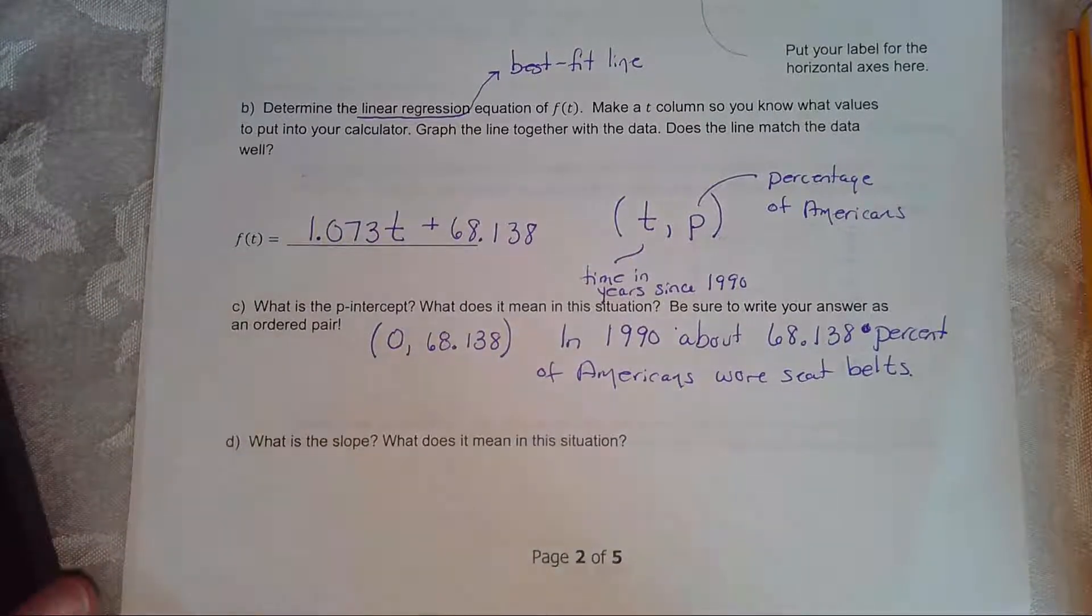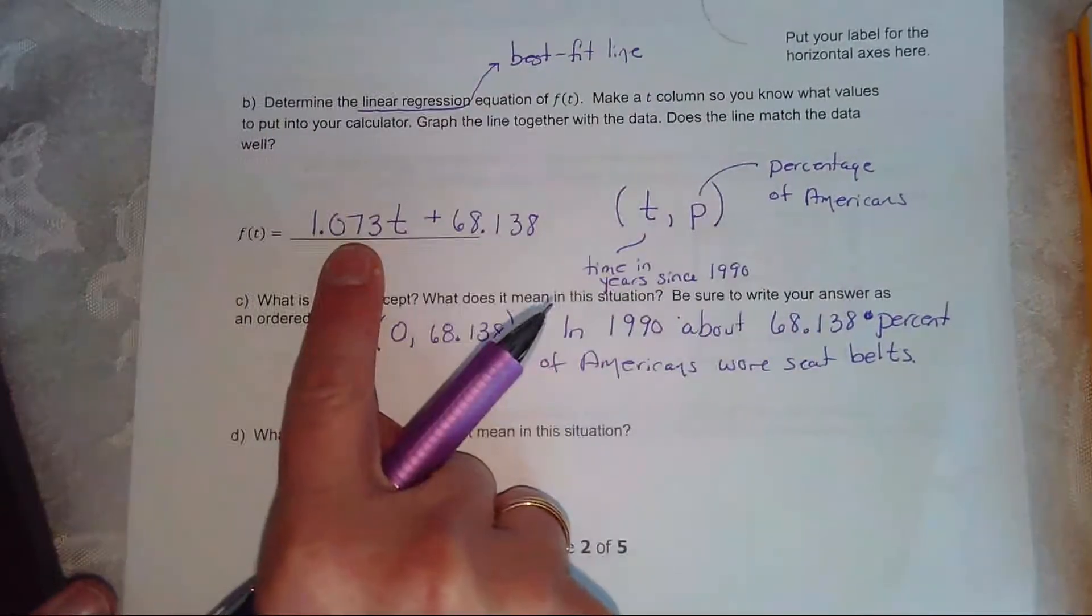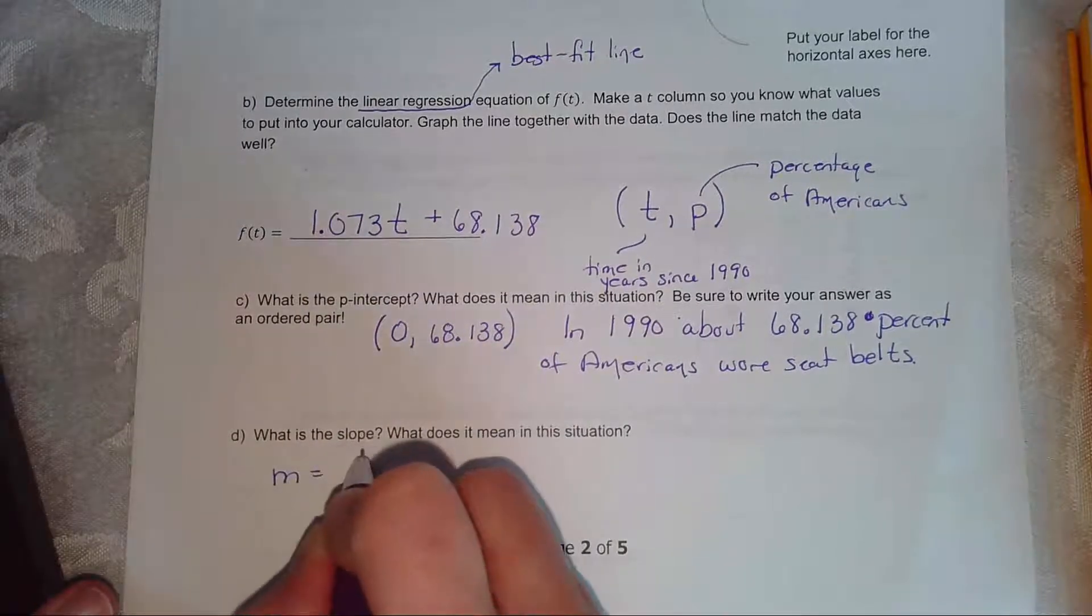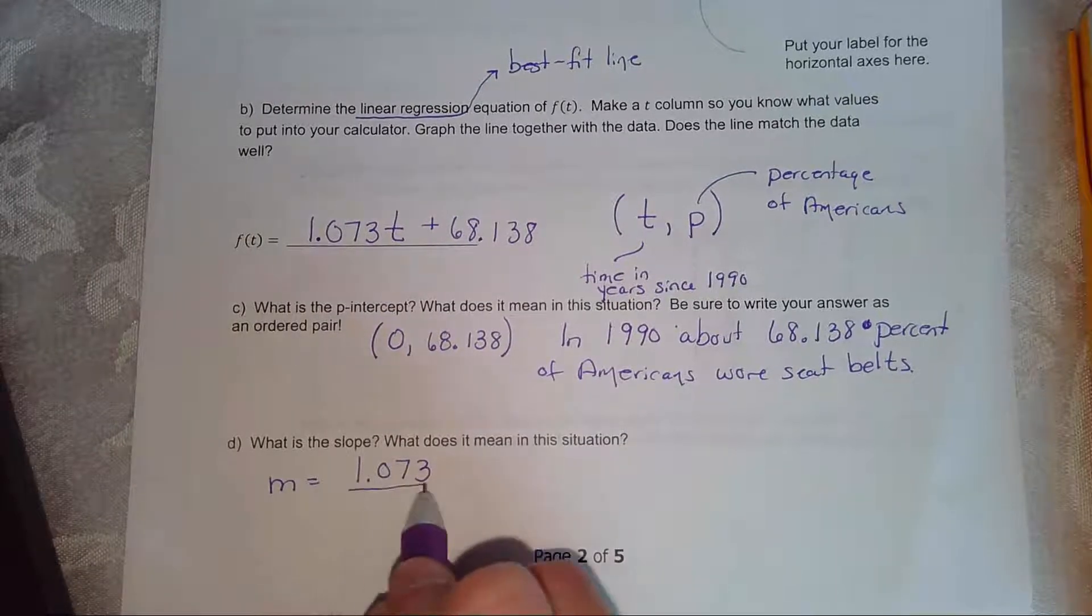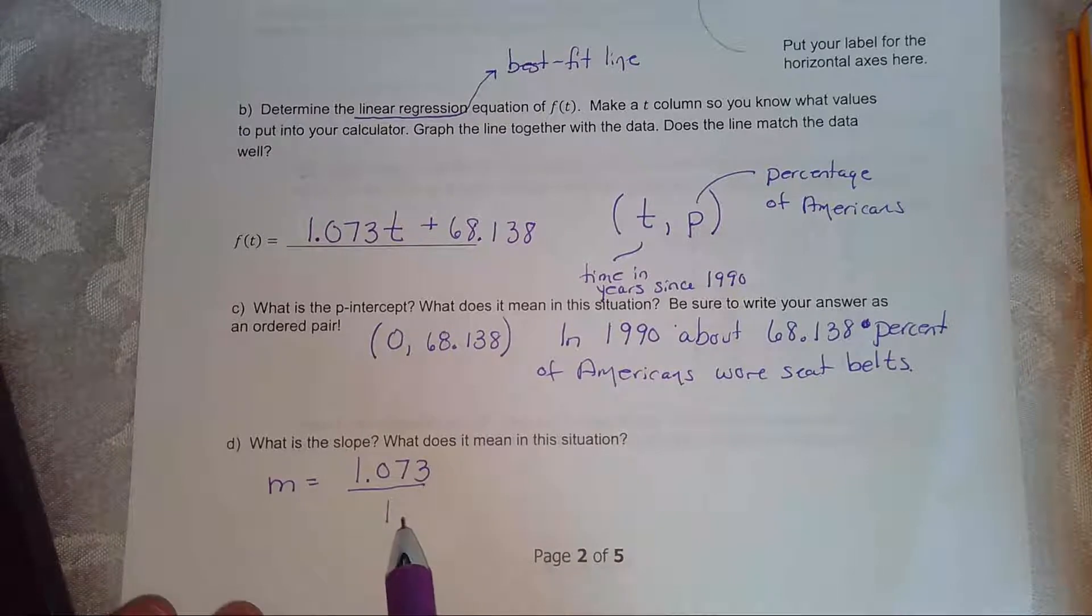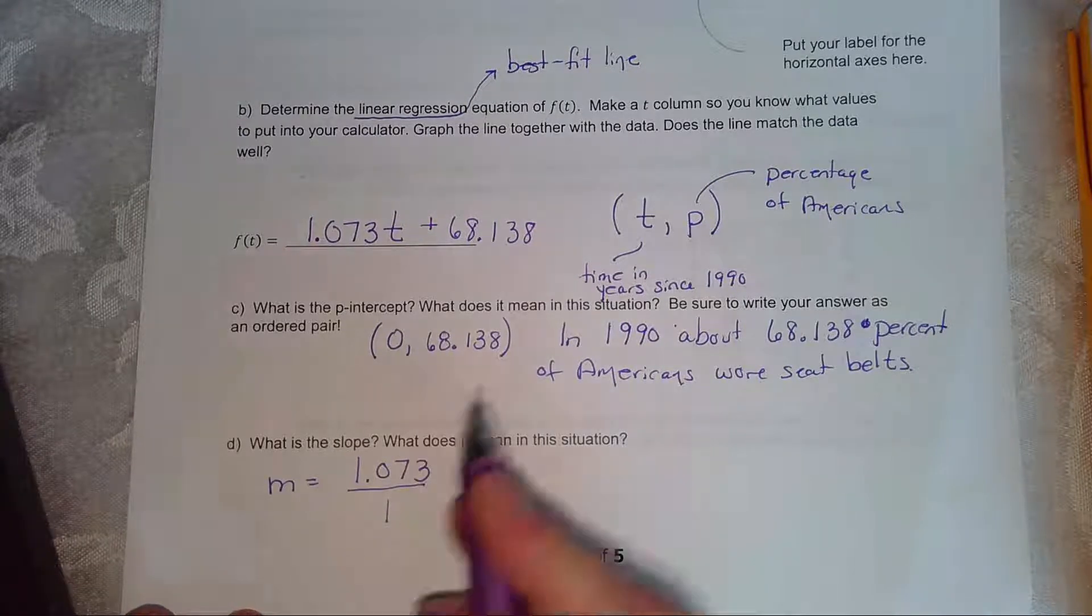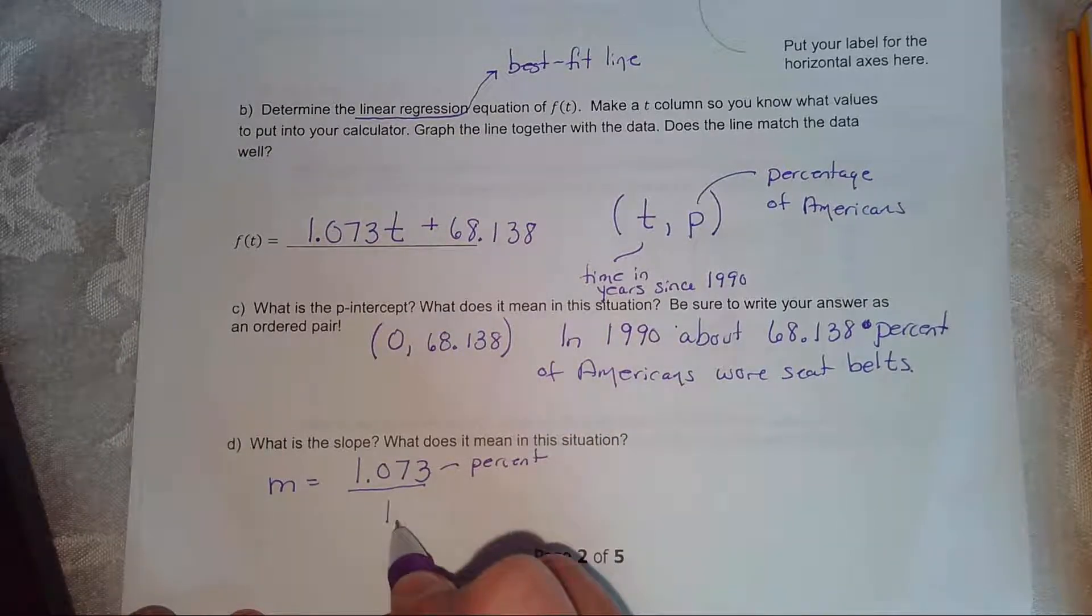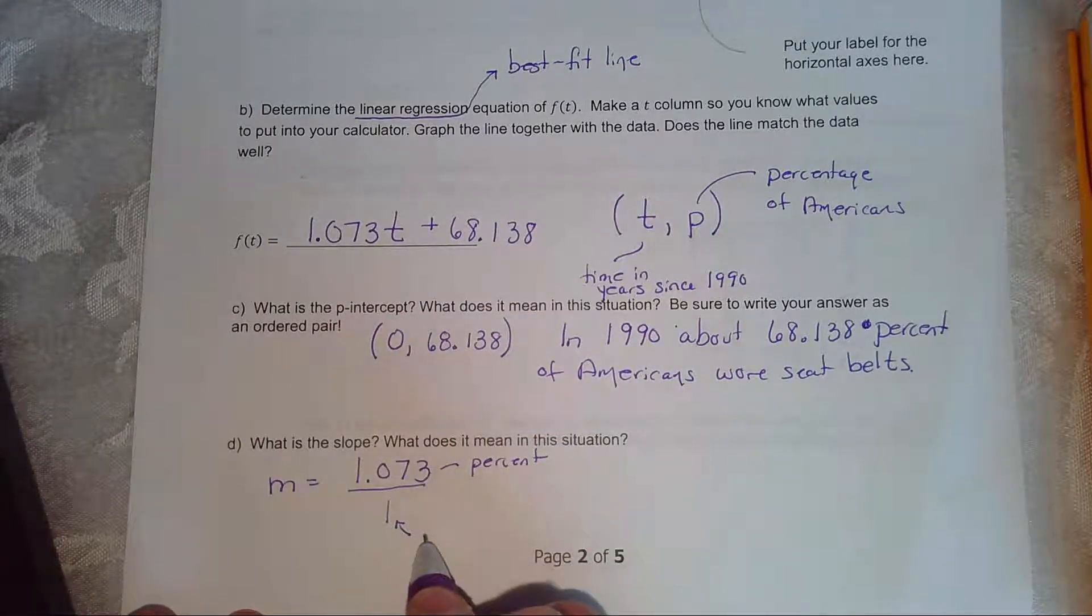So what is the slope? The slope is the number in front of your t value. So m is equal to 1.073. Now, to interpret it, I always put it over 1. And that will help me remember that there's a rise and a run. So the rise is the change in the y-value or the output. So that's a percent. And then the output or the run is the output. And that's going to be per year, because that's a change in years.